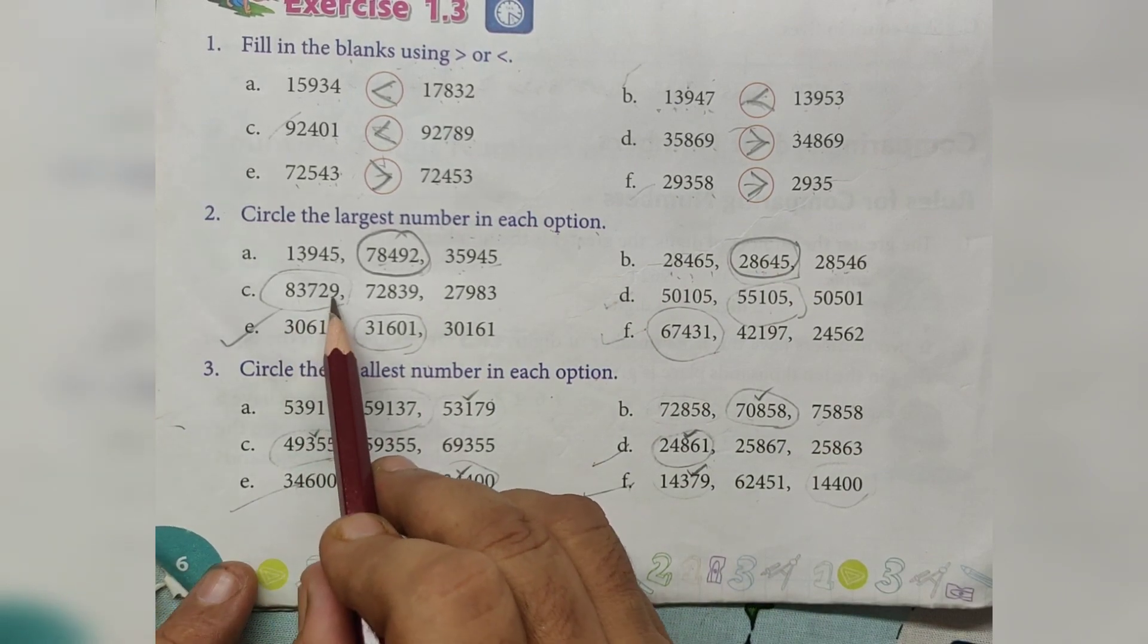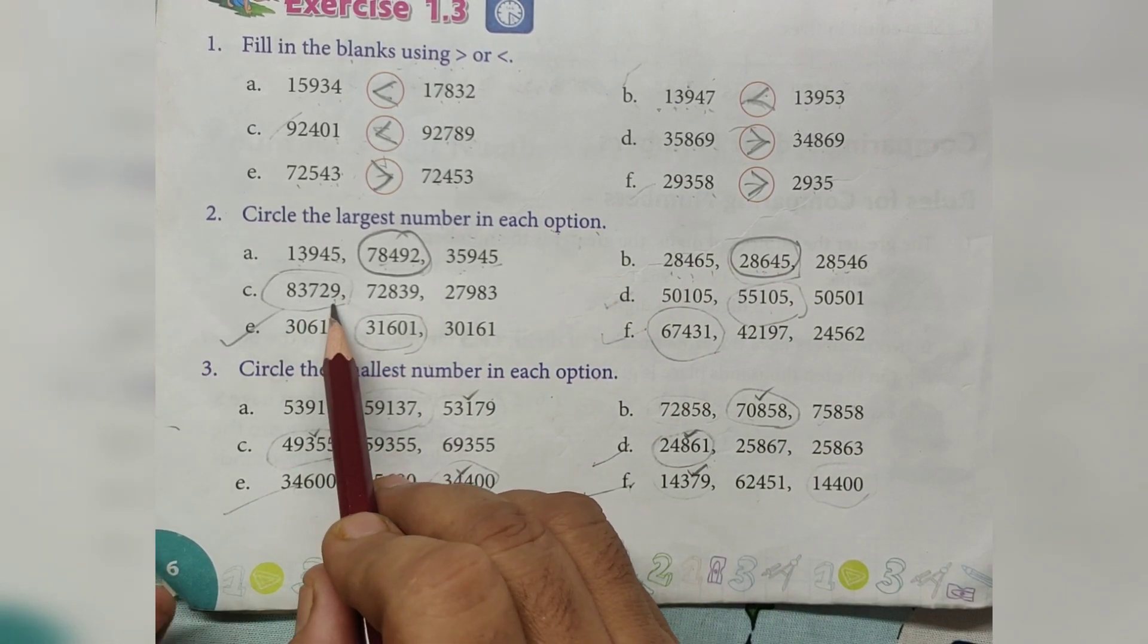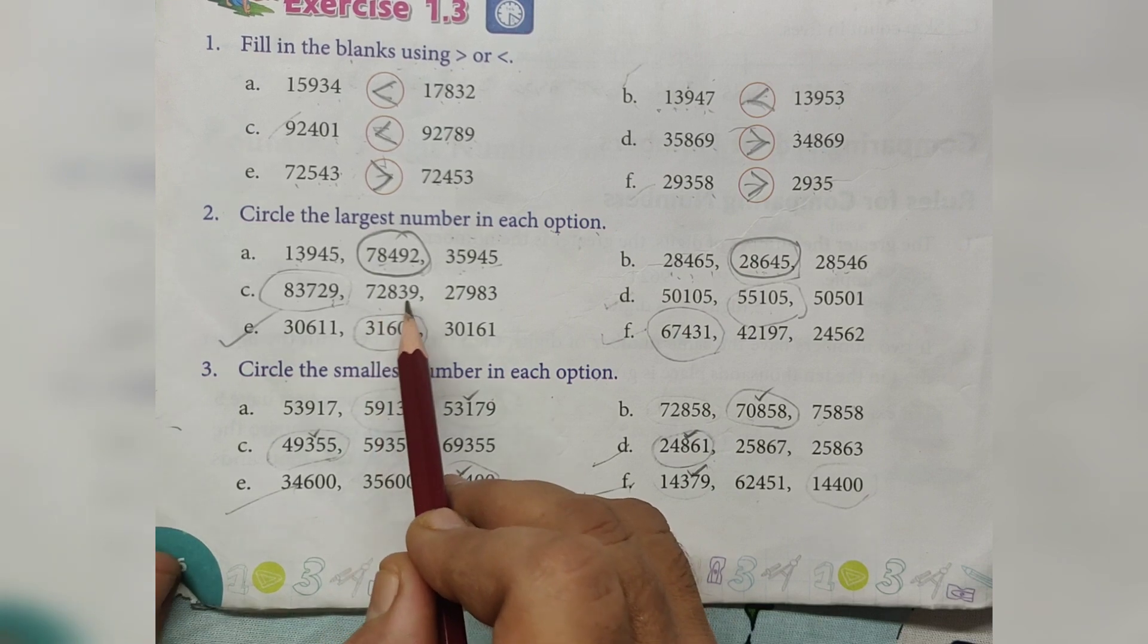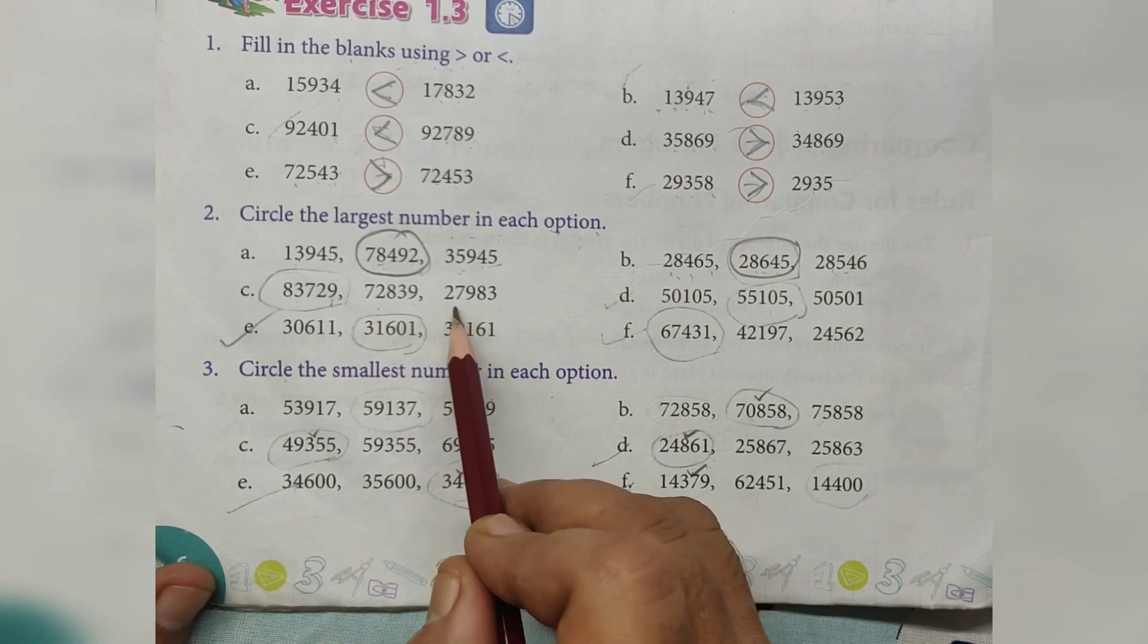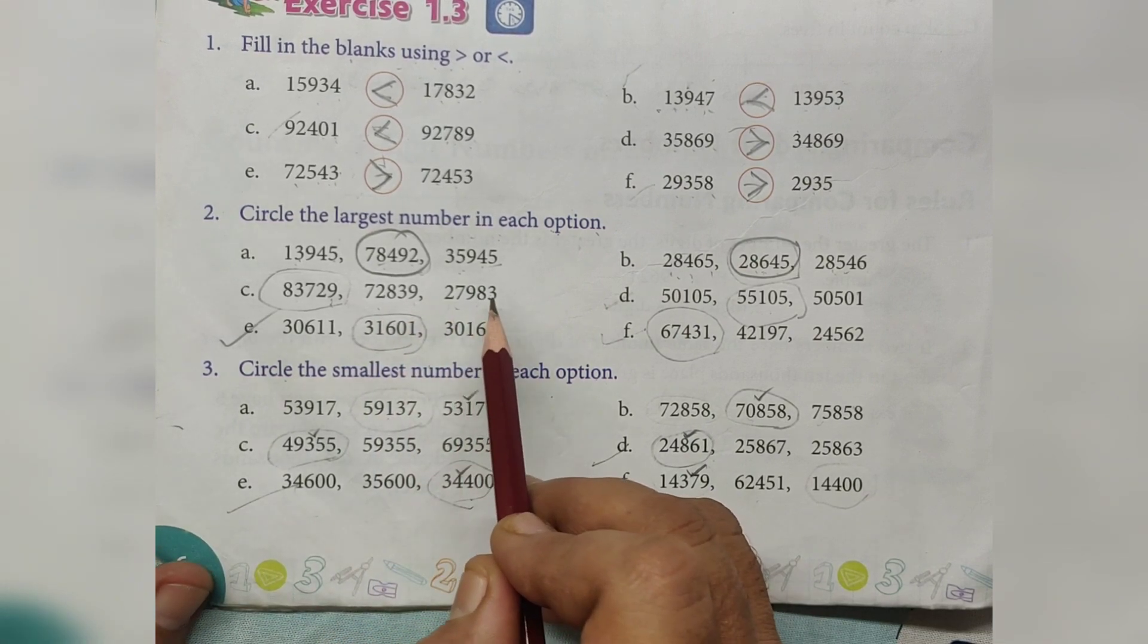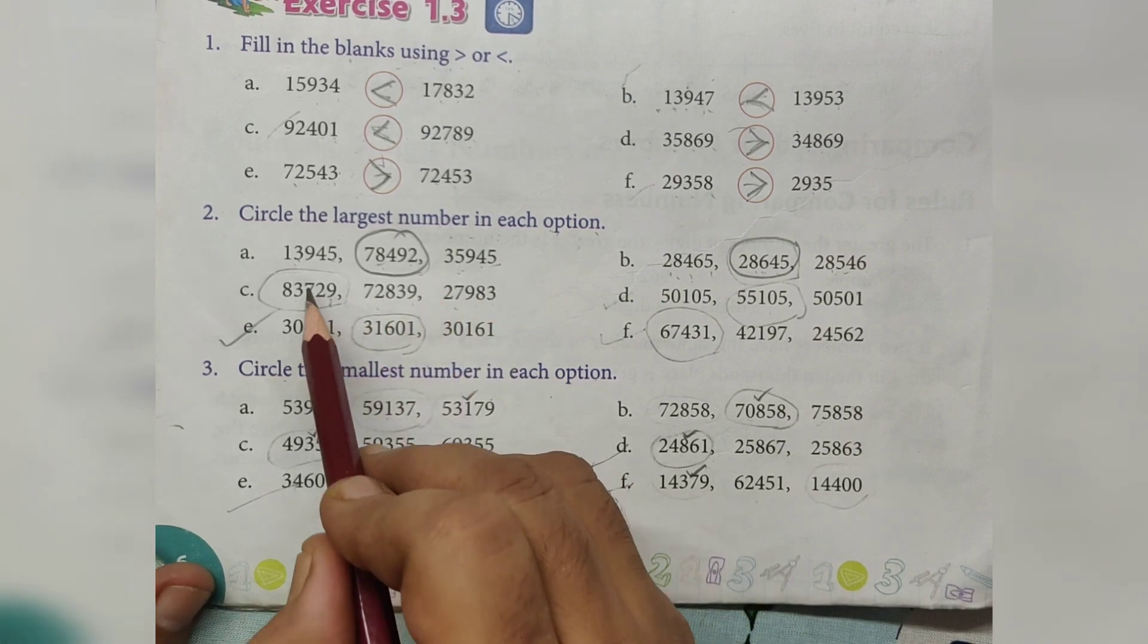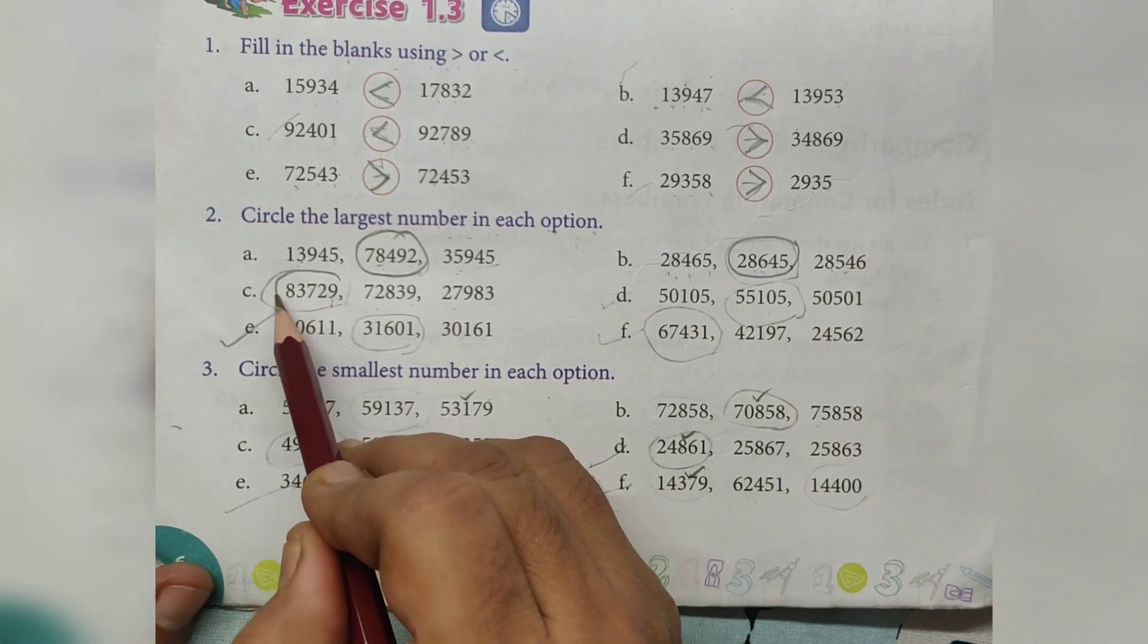83,729, 72,839, 27,983. 83,000, largest number.